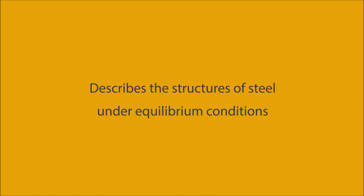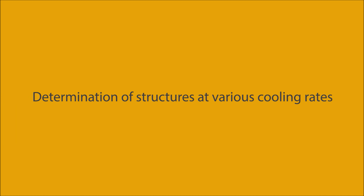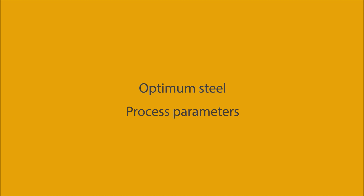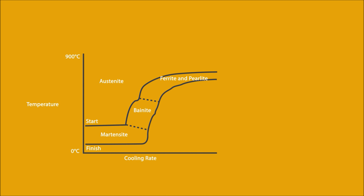While the iron-carbon diagram describes the structures of steel under equilibrium conditions — where enough time has been allowed on heating and cooling for any reactions to fully complete — both the continuous cooling transformation and time-temperature transformation diagrams allow determination of structures at various cooling rates, from slow to very fast. Both diagrams are helpful in selecting the optimum steel and process parameters to achieve a given set of properties. CCT diagrams are generally more appropriate for engineering applications, showing structures achievable by continuously cooling from the austenitization temperature at a constant rate, and often showing structures at the center of different size bars cooled in water, oil, and air.